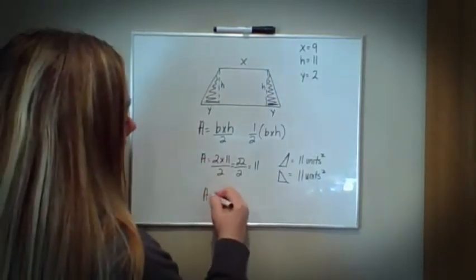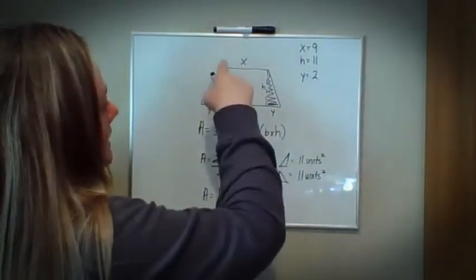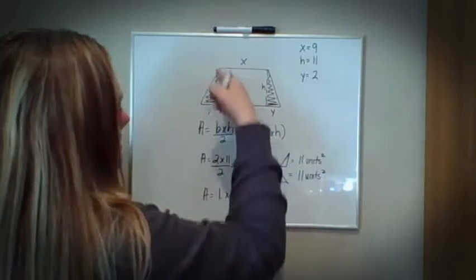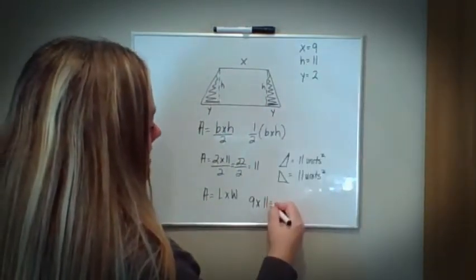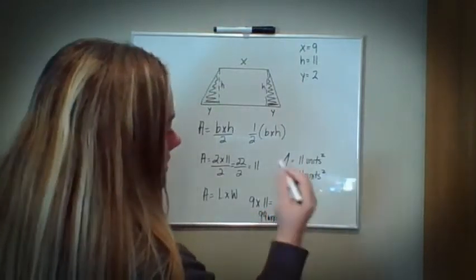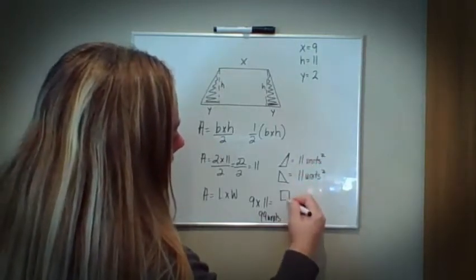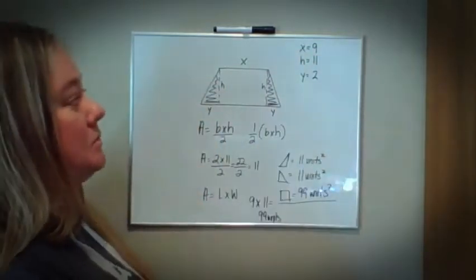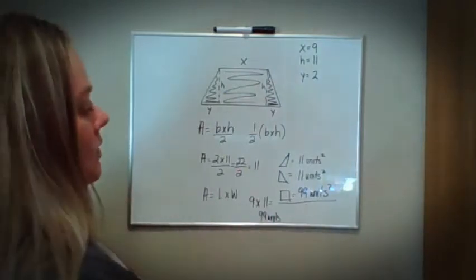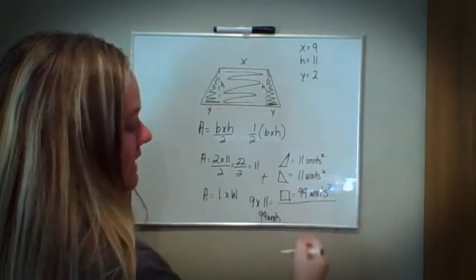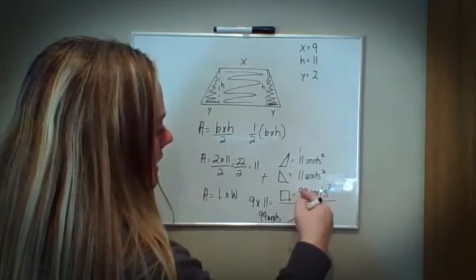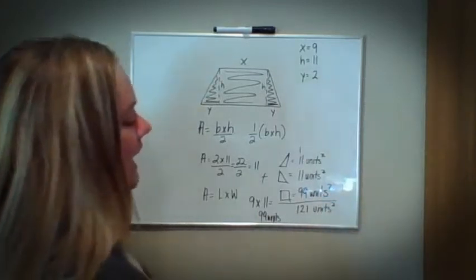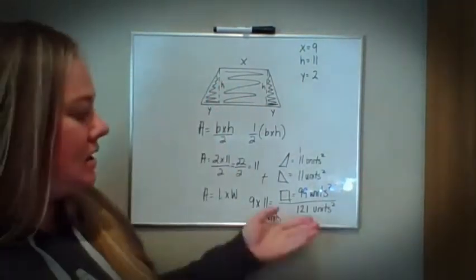For area, a rectangle is length times width. My length is 9 — not 7, but 9 — so we have 9 times the width, which is 11, which equals 99 units squared. So now I have my two triangles — 11 and 11 — and my rectangle, which is 99 units squared. To find the entire trapezoid, I'm going to combine them through addition: 11 plus 11 plus 99. 9 plus 2 is 11; 9 plus 2 is 11, plus 1 carried is 12. So the total trapezoid area — two triangles plus rectangle combined — is 121 units squared.